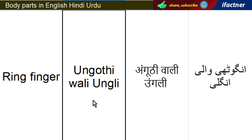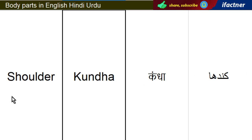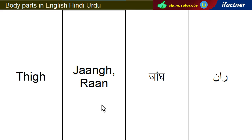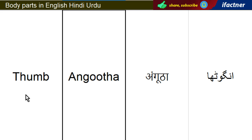Angooti wali ongli — Ring Finger. Kandha — Shoulder. Daant — Teeth. Jaangh, Raan — Thigh. Angooti — Thumb.